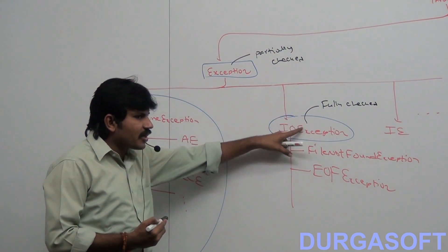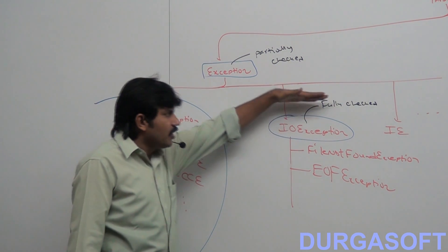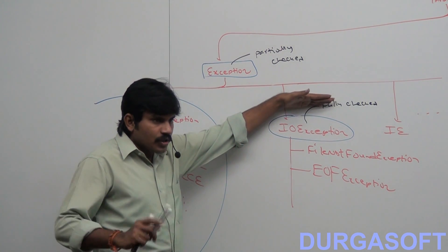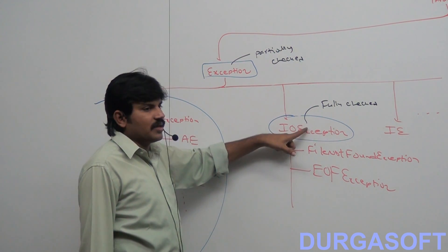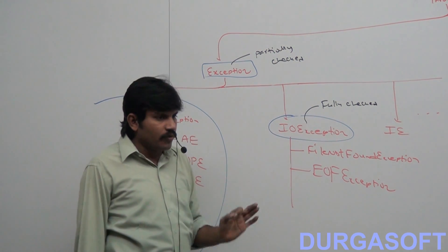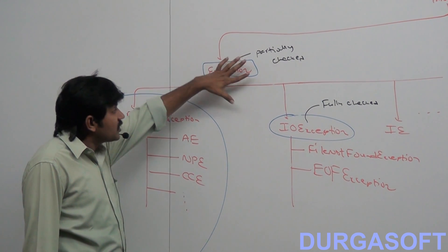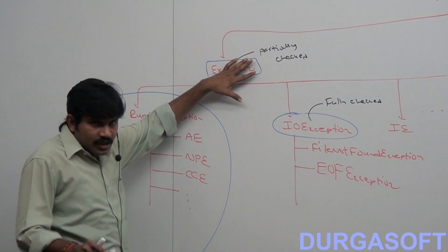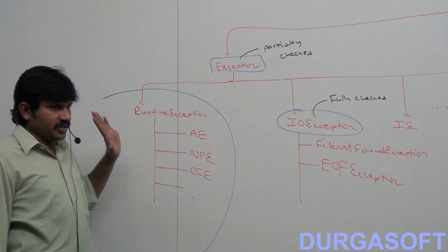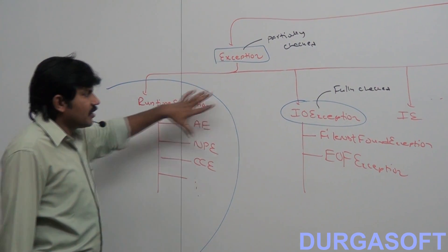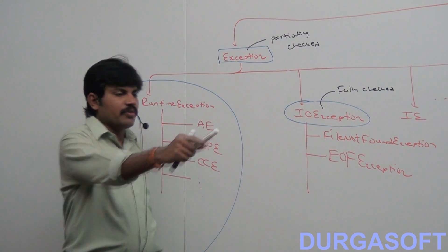Let me repeat once again. A checked exception is said to be fully checked if and only if all its child classes are also checked — that is called full checking. A checked exception is said to be partially checked if and only if some of its child classes are unchecked and some are checked. Such a type of checked exception is called partially checked.